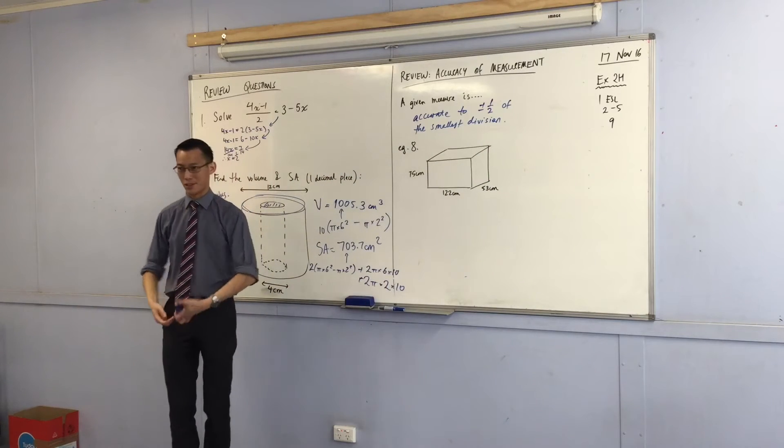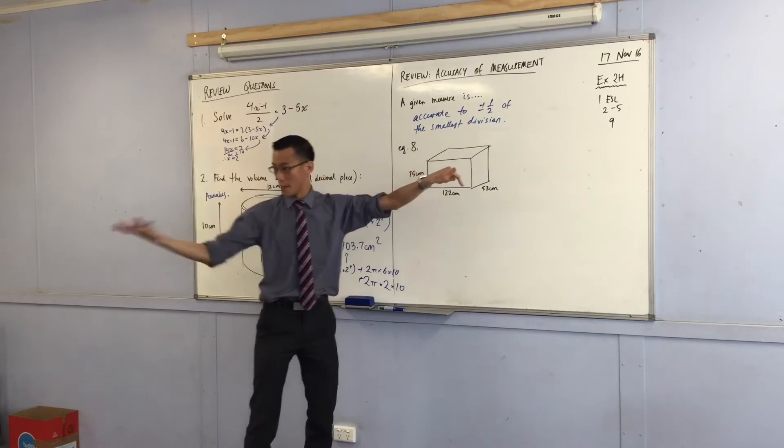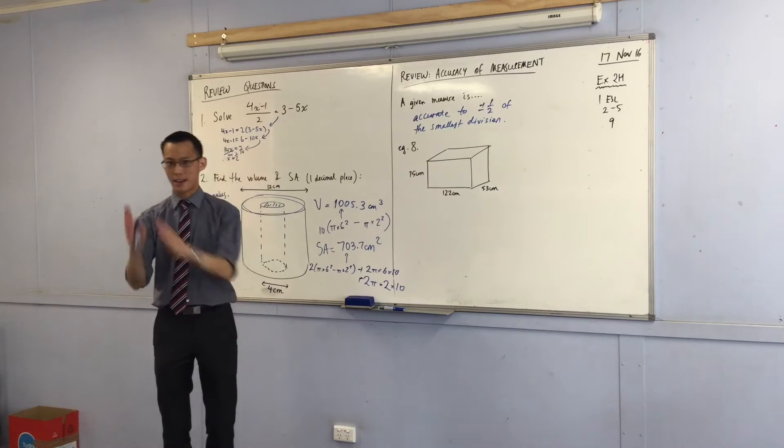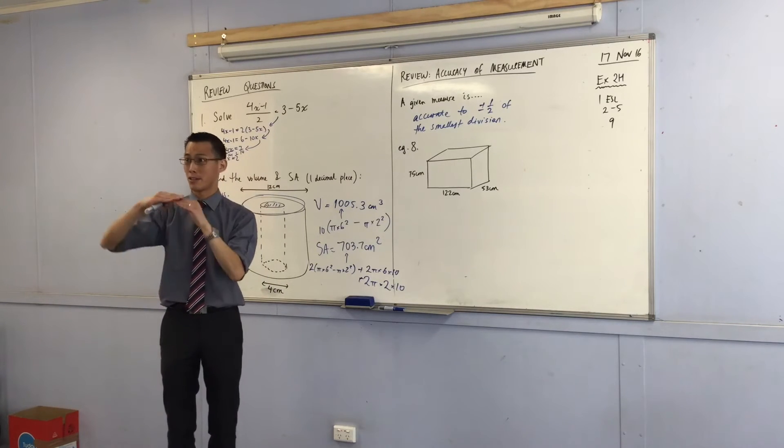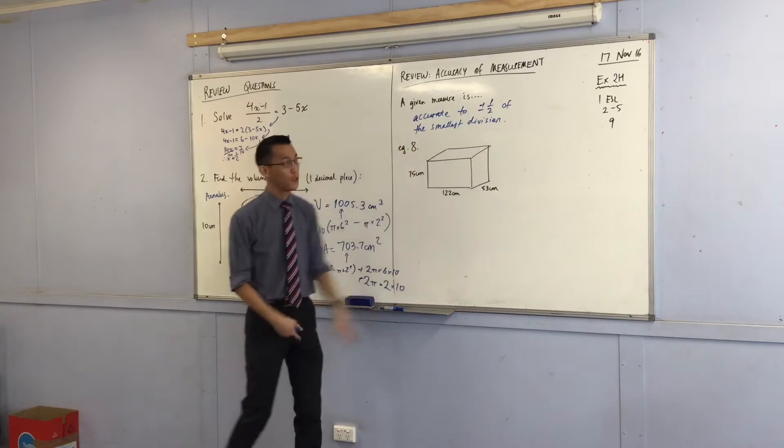If you've got something which is measuring to the meter or to the foot or whatever, then you're going to get plus or minus a half of a meter or foot or whatever. It could be degrees, like rotation, it could be degrees on a thermometer, whatever unit that happens to be. You're just looking for the smallest division.